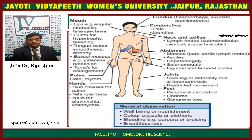In the general observation, look for the general well-being or nourishment of the patient. Check for the color, e.g. pale or cachectic. Check for bleeding if any, e.g. varicosities or bruising. And also check for the peripheral signs.